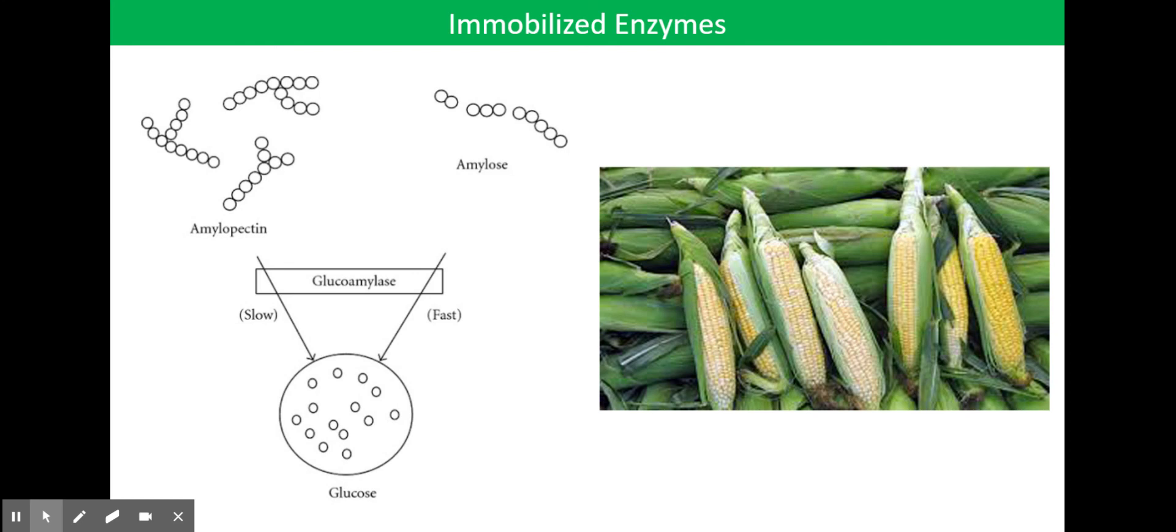And ultimately, we have glucoamylase, which converts dextrins to glucose. During the hydrolysis of starch, short polymers of glucose, which are called dextrins, are formed.